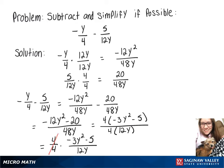And then since 4 over 4 is just 1, that goes away, leaving us with negative 3y squared minus 5 over 12y.